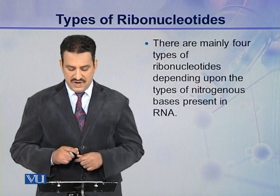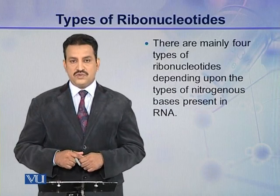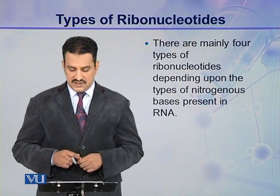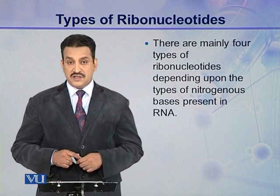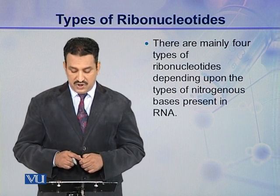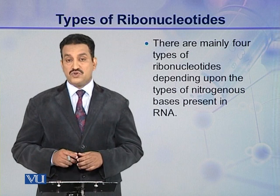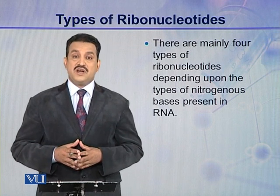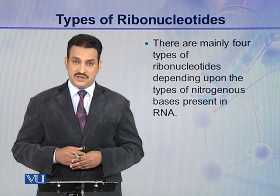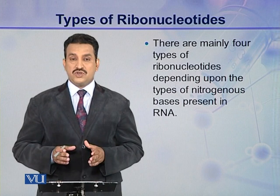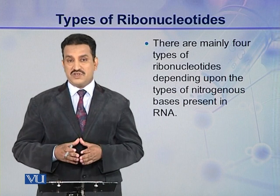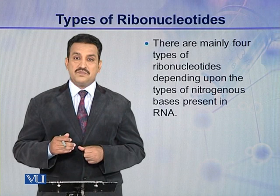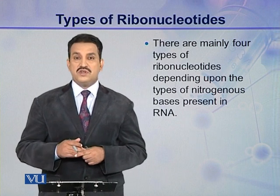There are four main types of ribonucleotides present in the cells, and it depends upon the types of nitrogenous bases present in a ribonucleotide. You know the structure of a ribonucleotide — there are three components. One is pentose sugar, ribose sugar,